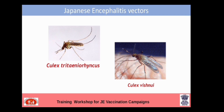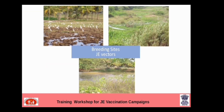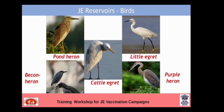Culex mosquitoes transfer the Japanese Encephalitis virus. These are the breeding sites: rice fields, stagnant water, and rivers. These are the reservoir birds involved in the transmission cycle.